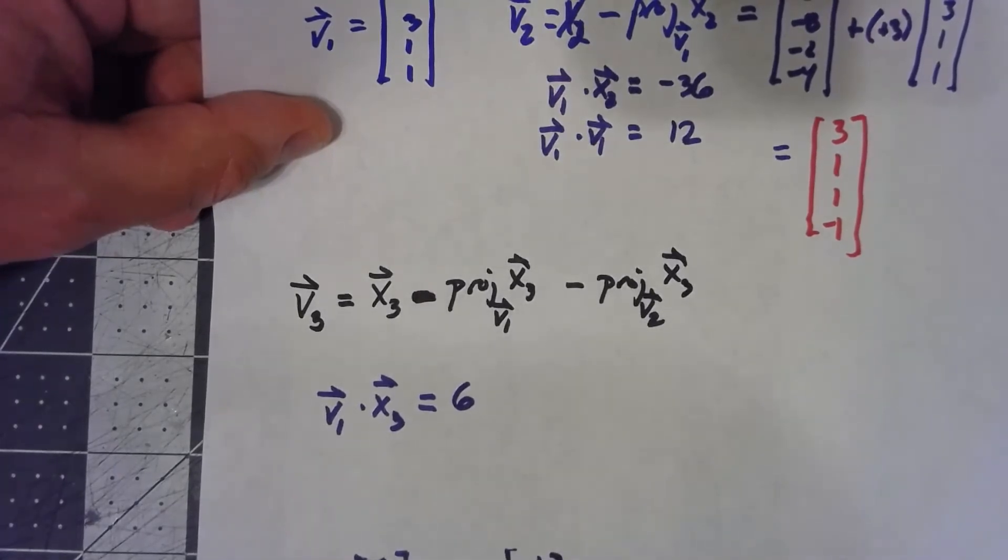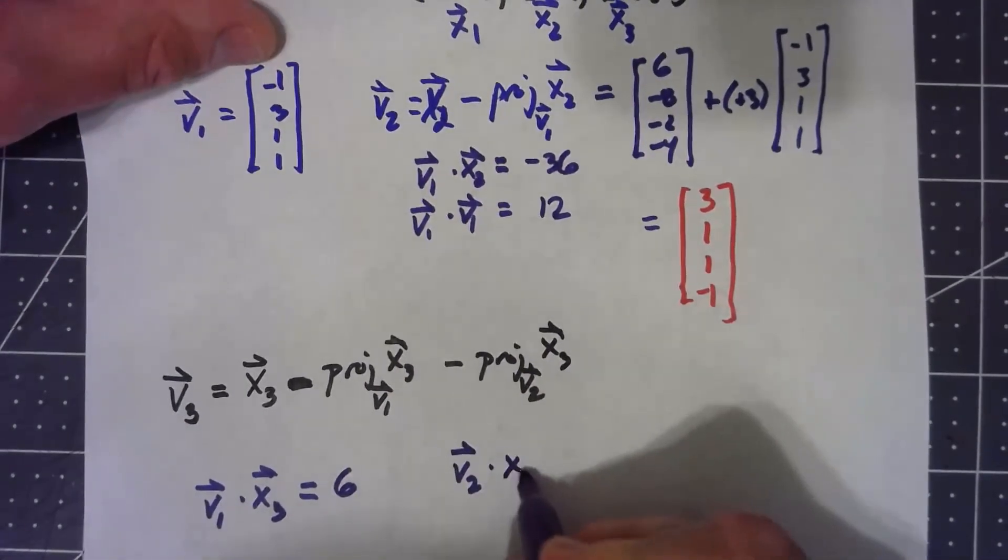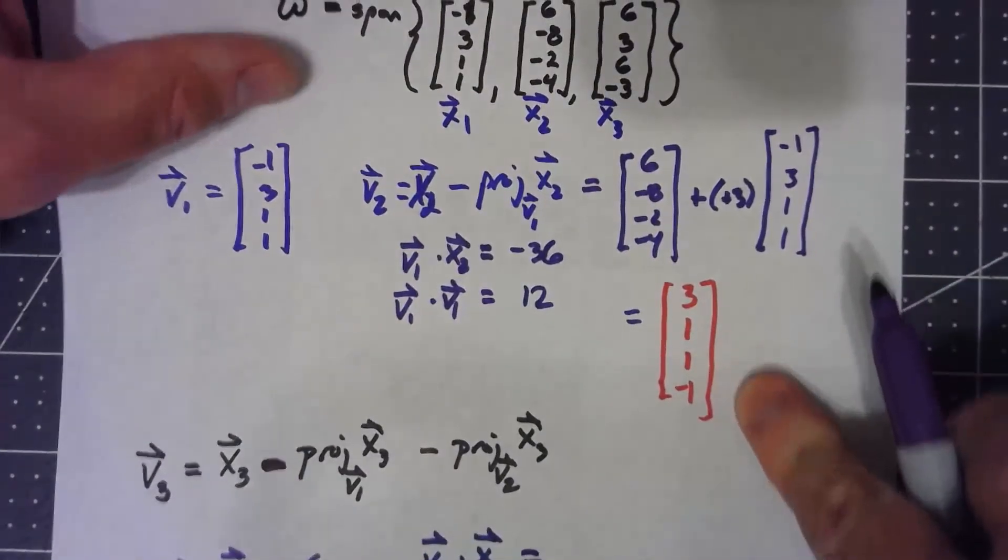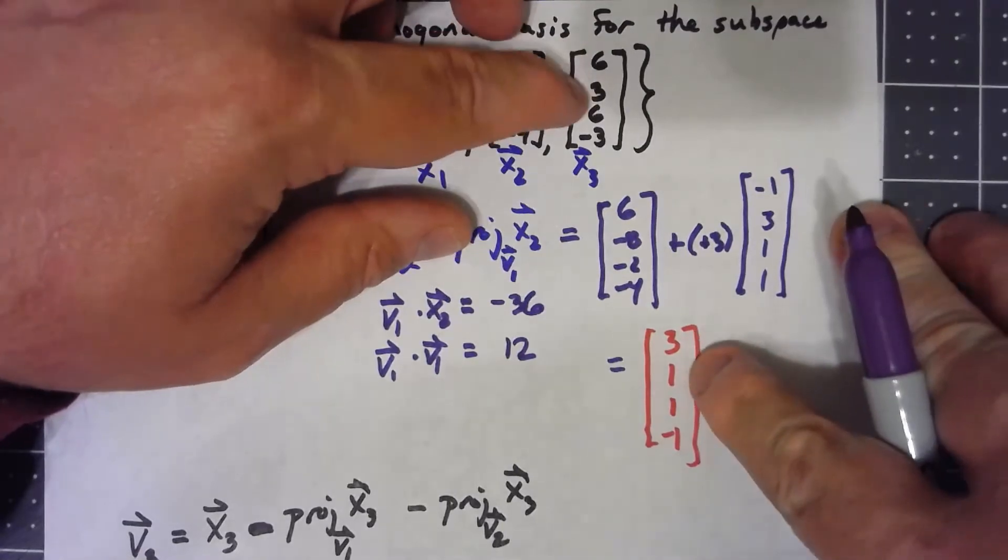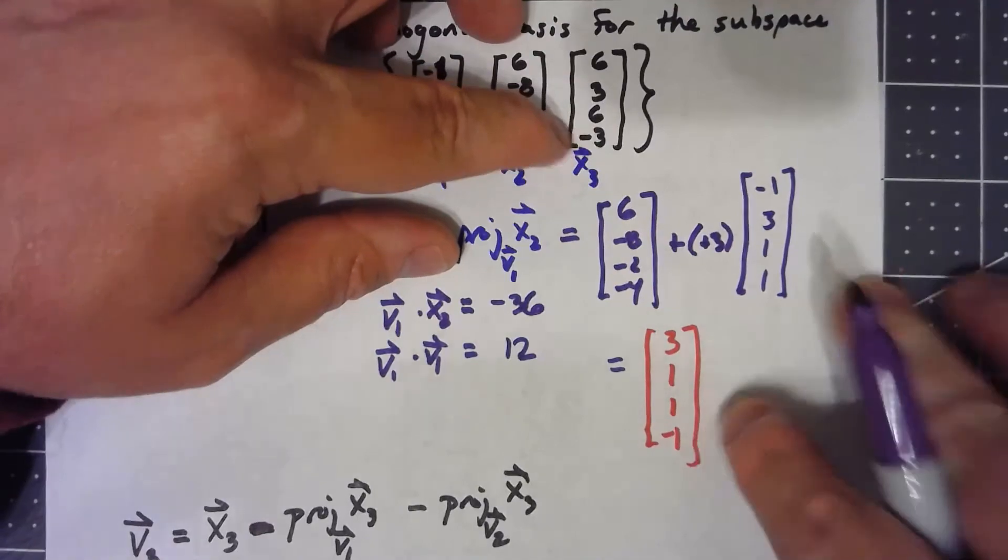Now there's another subtraction I've got to figure out. I need to take v2 dotted with x3. v2 is this one, dotted with this one, is 18, plus 3 is 21, plus 6 is 27, plus 3 is 30.